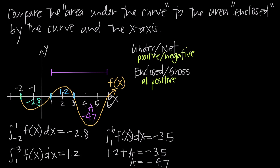So the area between 3 and 6 is -4.7 in net area terms. When you take an integral and get a negative result, that means there's more area under the x-axis than above it. Now that we have our three areas, to find area under the curve over the entire interval from -2 to 6, we compute net area: -2.8 + 1.2 + (-4.7) = -6.3. So the net area, or area under the curve, is -6.3, which makes sense because the graph shows more area below the x-axis than above it.